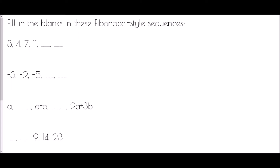Fill in the blanks in these Fibonacci-style sequences. First: 3, 4, 7, 11. Let's check — 3 plus 4 is 7, and 4 plus 7 is 11. So next we're looking at 7 plus 11, which is 18. Then we add 11 and 18 to get 29.